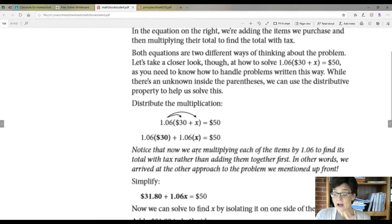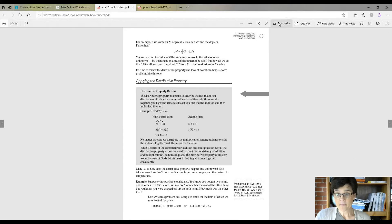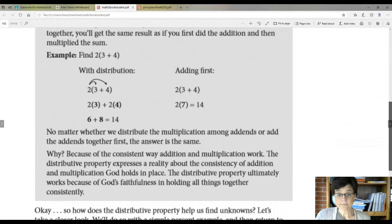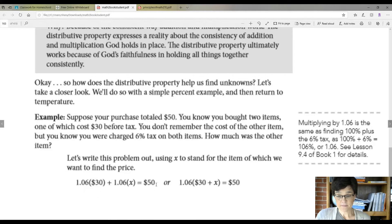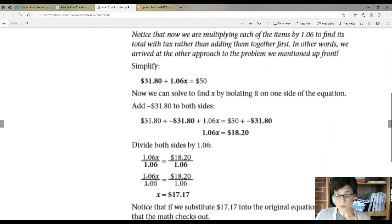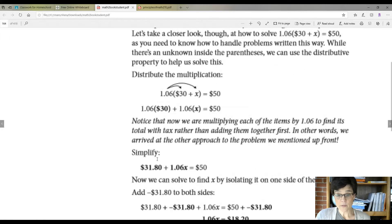So 1.06 times 30 plus 1.06 times X equals 50. Notice that now we're multiplying each of the items by 1.06. The distributive property got us right back to where we started for the most part. So then what we're going to do is simplify. You're going to take 1.06 times 30, which gives you 31.80 plus 1.06 times X just gives you 1.06X equals $50.